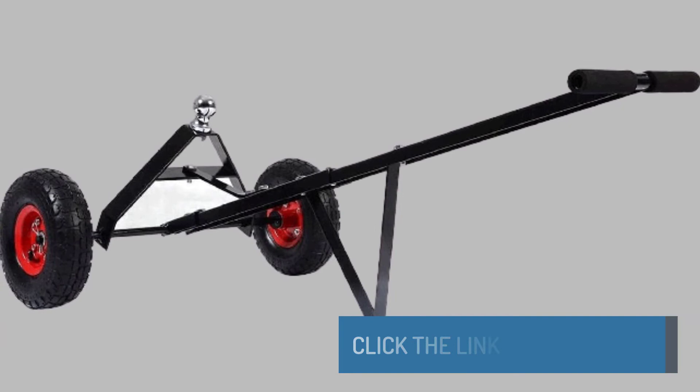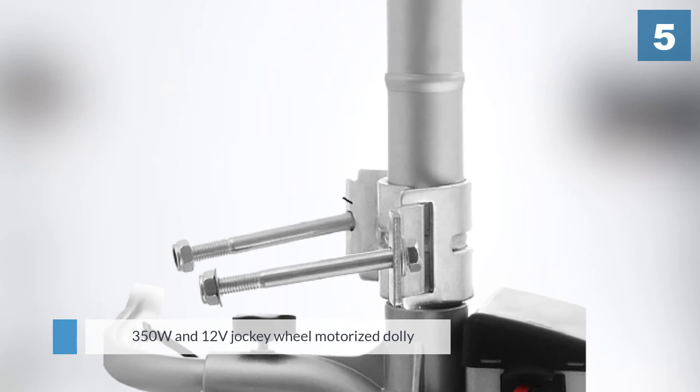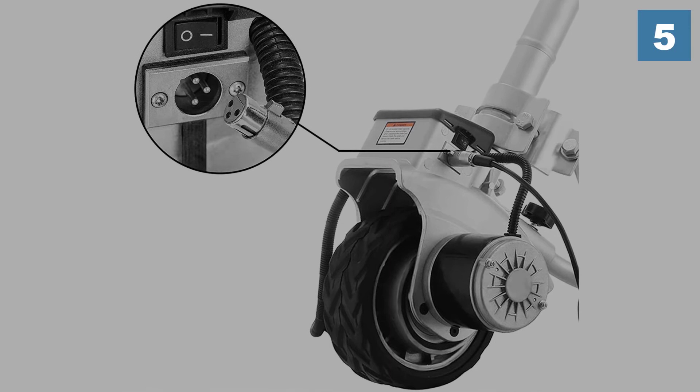Number five: Happy By Trailer Mover 350W 12-volt electric trailer. This 350W 12-volt jockey wheel motorized dolly is rated to lift trailers weighing up to 5,000 pounds. With the max jockey wheel load of 600 pounds, this is capable of moving trailers into place with ease.